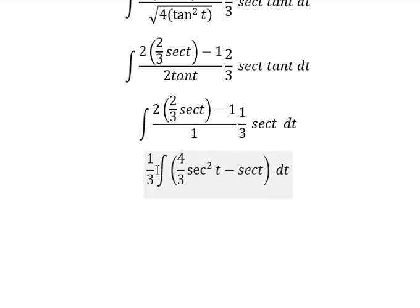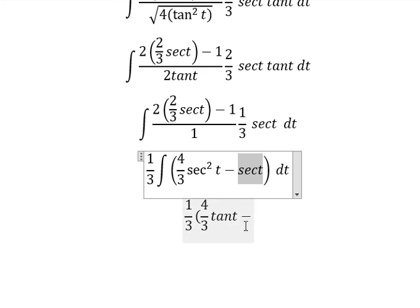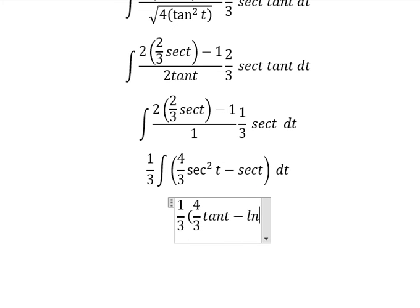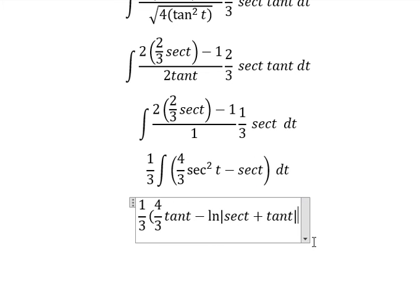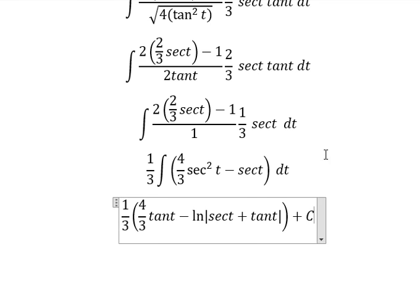Next, we have the final answer. So the integration of secant of t square, we have tan t. The integration of secant of t, we have ln of the absolute value of secant of t plus tan t. And I will put c.